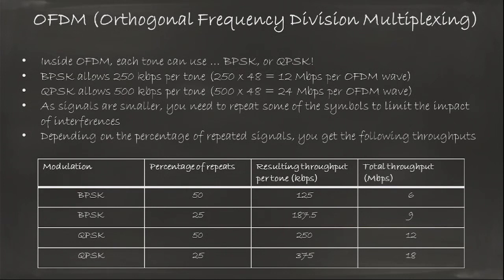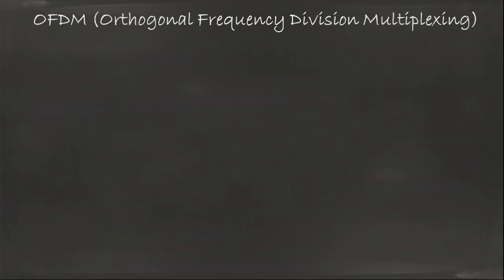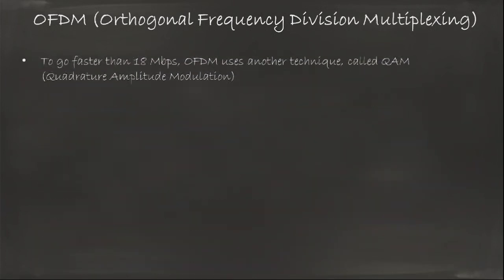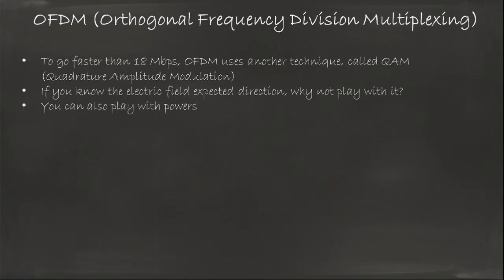That's pretty good, but in a world where wired communications go at 100 meg per second, that is not good enough. So we need to find another way to be even faster. So in OFDM, we use another technique called QAM, that stands for Quadrature Amplitude Modulation. And what that means is we say, you remember my channel that was polarized with my vertical polarization? So if we know that there is an electric field and the magnetic field, and we know their expected direction for each of the subtones, why don't we play with those directions a little bit?